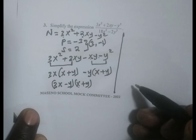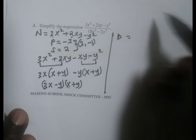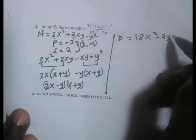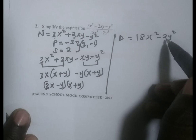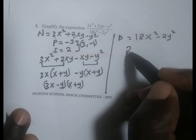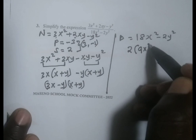We go to the denominator. The denominator has 18x squared minus 2y squared. So the first step is to factorize by looking at the common factor between 18 and 2. Therefore 2 is common. We multiply by 9x squared minus y squared.